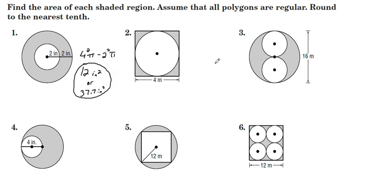For number 2, we need to find the area of the square, which is 16, 4 by 4, and we're going to subtract away the area of the circle. The circle has a radius of 2, so 2 squared is 4. 4 pi, 16 minus 4 pi comes out to 3.4 square meters.